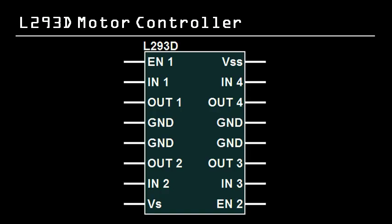For this we'll use the L293D motor controller. Let's first go over its pinout. It has two voltage inputs, VSS and VS. VSS powers the chip's logic and should be supplied with 5V from the Raspberry Pi. VS is the voltage supplied to the motor and can be set as high as 36V.